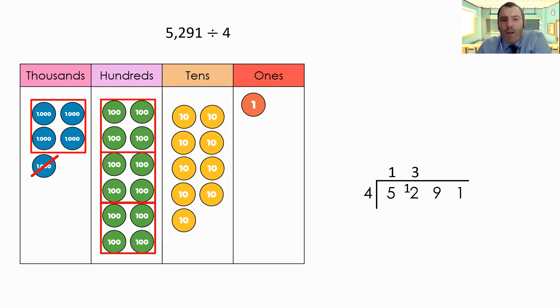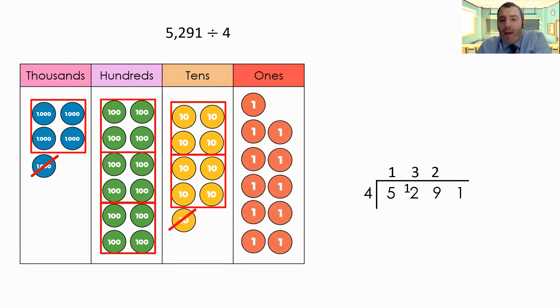So move on and look at my tens now. The same process. One lot of four, two lots of four. I've got the same problem I had with my thousands. I've got one left over that's going to need to exchange. So to do that, I'm going to put the two above the nine. I'm going to exchange my 10 for 10 ones. I've now got 11 ones. So I need to make sure I know that in my written method.